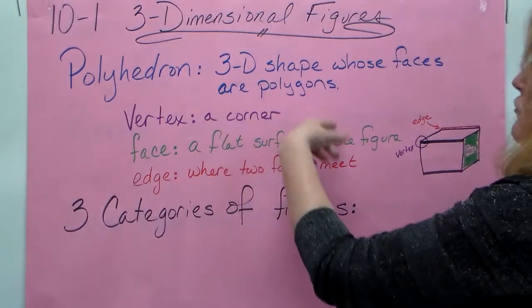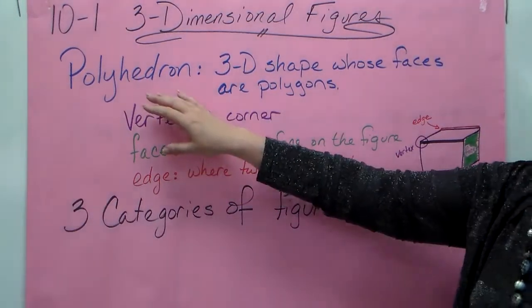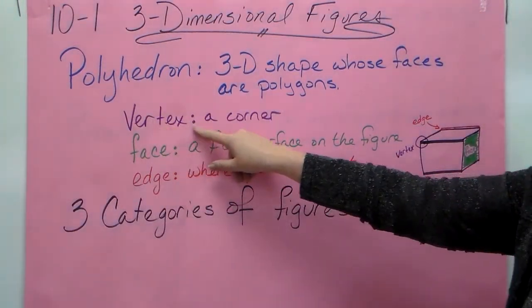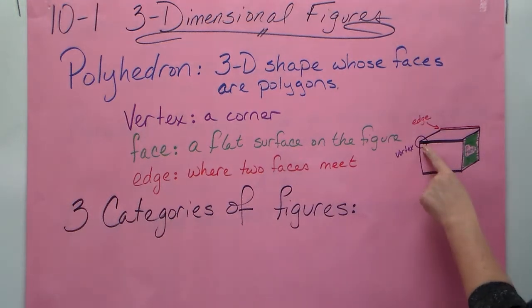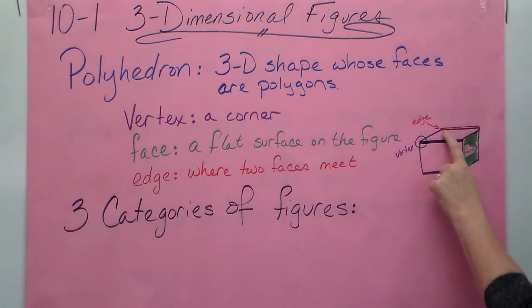So polyhedrons have three basic parts to them. They have the vertex, which is a corner here. They have face, which is a flat surface. So this has six faces, and then they have an edge, where two faces meet. This would be an edge. This is an edge. This is an edge.